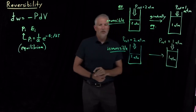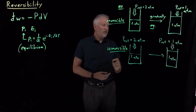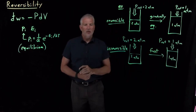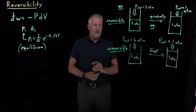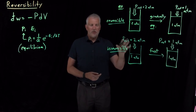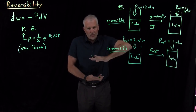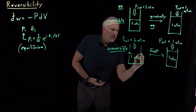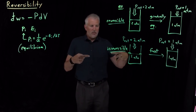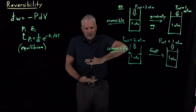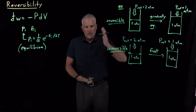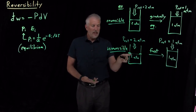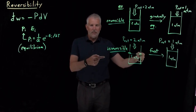Instead of doing that decrease in pressure slowly and gradually, we're going to decrease the pressure very quickly. Let's say we put pins in the piston holding the box closed, so we can release the external pressure and drop it down to one atmosphere while the box lid doesn't move anywhere because it's pinned in place.